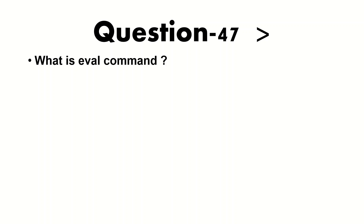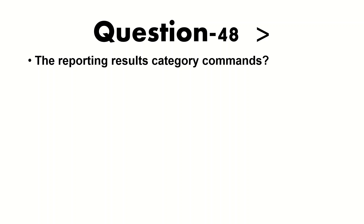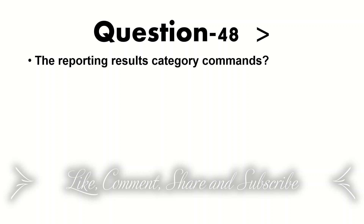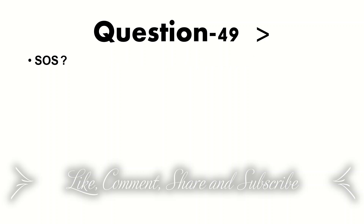The next question is about reporting and result category commands. These are commands where you can present reporting output. Generally, transforming commands are categorized as reporting commands — they present output in tabular format. Commands used for reporting include table, stats, chart, and timechart. Finally, the next question will be about SOS, which stands for Splunk on Splunk.